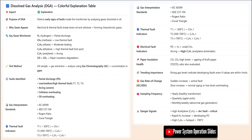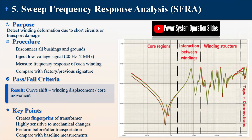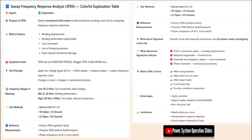Test 3: Winding Resistance Test. The winding resistance test is designed to detect loose connections, bad joints, and on-load tap changer (OLTC) contact wear. This procedure involves connecting a high-current DC micro-ohm meter to the winding ends and injecting DC current, typically 1A–10A depending on transformer size. Due to the inductance of the windings, technicians must wait for reading stabilization before recording values. Measurements are taken for all tap changer positions, and resistance symmetry is compared phase-to-phase. Acceptable results show phase differences of less than 2%, while high deviations may indicate OLTC contact carbonization or other connection issues that require maintenance.